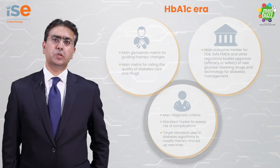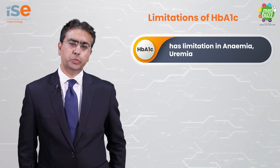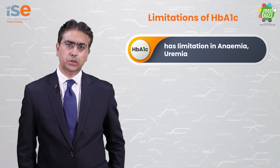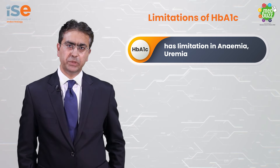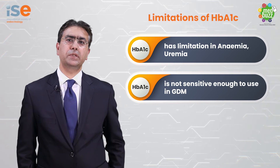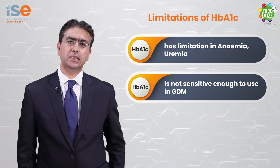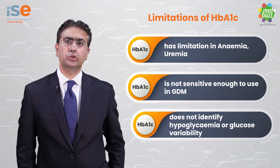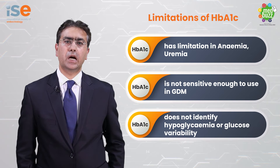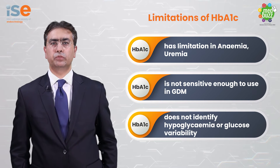But HbA1c has got its own limitations. It cannot be used in people with anemia and uremia. It is not sensitive enough to use in pregnant ladies who have got diabetes mellitus, and it does not identify hypoglycemia or glucose variability.